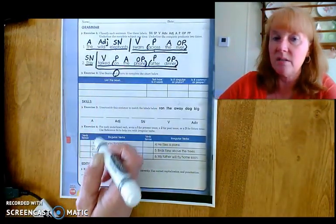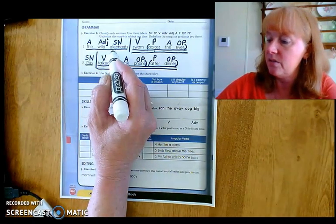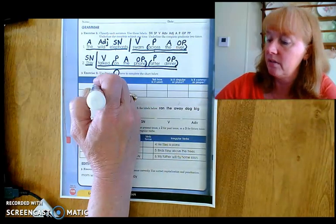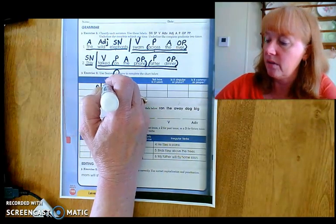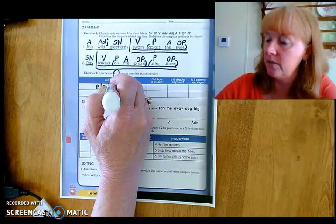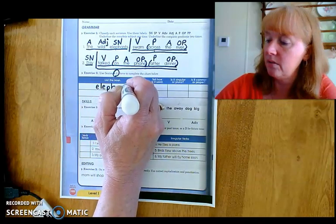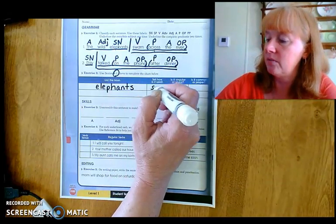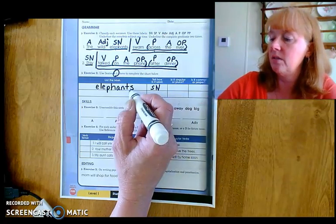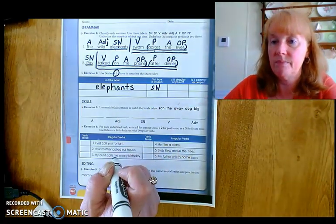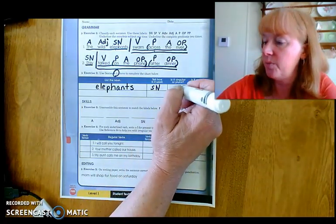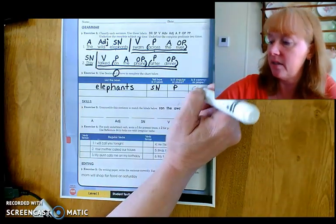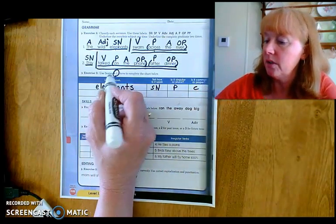Okay. For our noun chart, it says use sentence number one. So the nouns are what? Elephants and river. So, elephants. How is it used? It's the subject noun. Is it singular or is it plural? It is plural. Common or proper? It's not a name, right? So it has to be common.